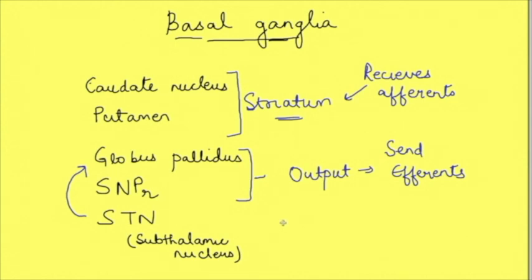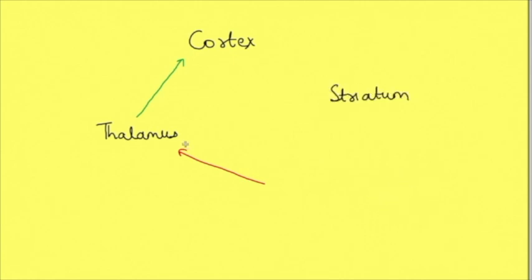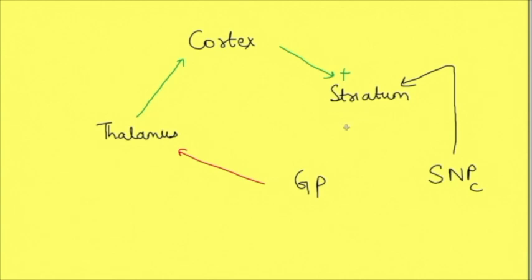Now let us elaborate on the basic circuitry: the thalamus triggers and excites the cortex, and this is under the negative control of the basal ganglia. Instead of basal ganglia, we will now introduce the receiving and output nuclei — the striatum and globus pallidum. The globus pallidus, being the output nucleus, sends an inhibitory signal to the thalamus. The striatum receives signals from the cortex or from substantia nigra pars compacta, which causes release of dopamine. In reality, the striatum receives input from vast areas of the cortex, forming various loops connecting different cortical regions to the basal ganglia and thalamus.